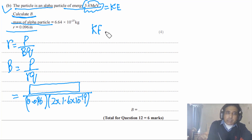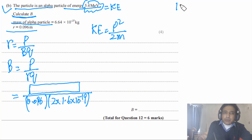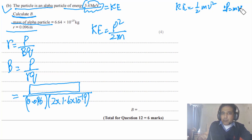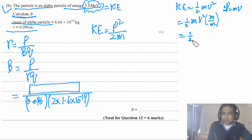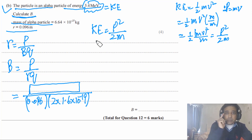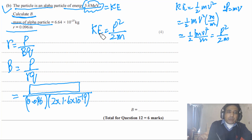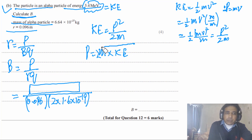Kinetic energy equals P² / 2M. You can derive this: KE = ½mv², and since momentum P = mv, we have KE = ½mv² = (mv)² / (2m) = P² / 2M. So momentum P = √(2 × mass × kinetic energy). It is very important to remember that kinetic energy equals P squared divided by 2M, where P is the momentum and M is the mass of the particle.